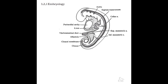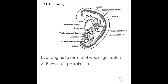We'll start with embryology. For the sonographer, embryology is not super important — we don't need to dive deep into it — but it's nice to know where organs originate, especially when talking about congenital diseases. With the liver, there are two things to know. One, the liver begins to form at about four weeks gestation. At week five, it starts hematopoiesis — the creation of red blood cells. In adults, this is taken over by bone marrow, but in the fetus, it is done by the liver.